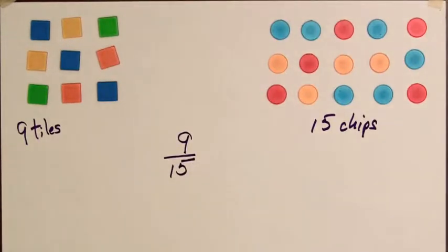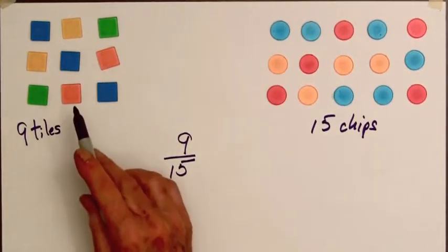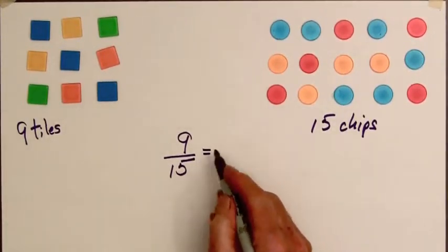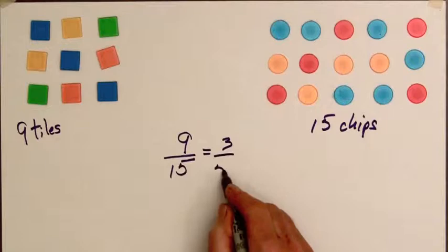And usually we write ratios in lowest terms, so the ratio of the number of tiles to the number of chips is 3 to 5.